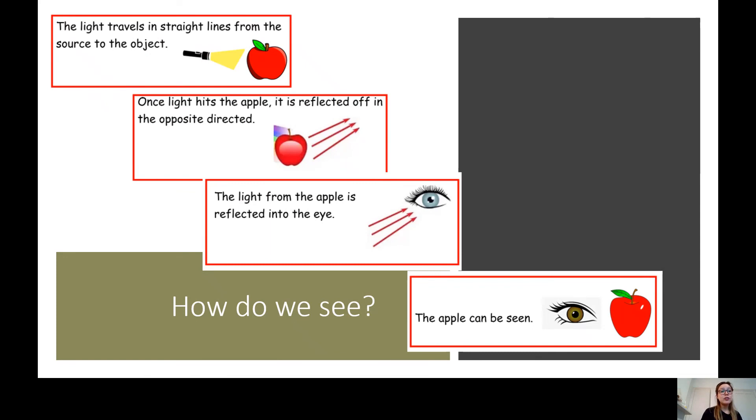OK, here's the question. How do we see? There are various stages. And what's important to note is that light travels in straight lines from the source to the object. So does light move in jiggity-jaggity, wavy lines? No. Light moves in straight lines, straight like a ruler, from the light source to the object. So we're pretending that we're looking at an apple. It starts at the light source and then moves towards the object.